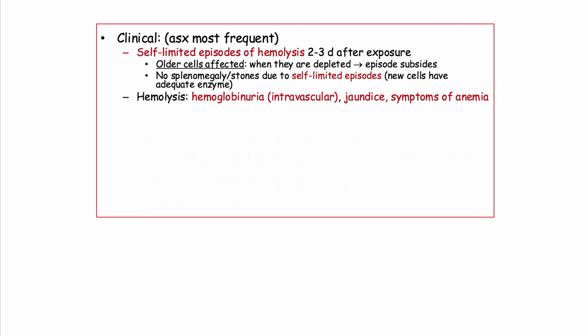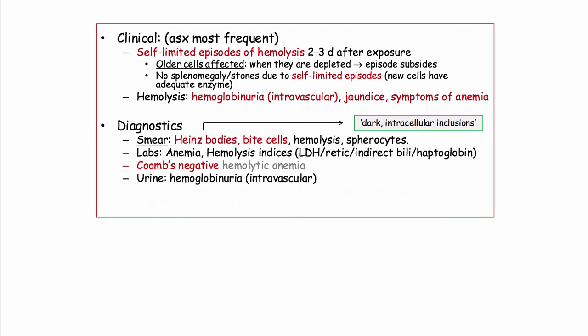Most episodes are asymptomatic and generally self-limited following oxidative stress exposure. As such, typical findings of chronic hemolysis, such as splenomegaly and pigment stones, are lacking. Clues to acute hemolysis include pink or red urine, jaundice, and symptoms of anemia such as shortness of breath or weakness. Diagnostically, Heinz bodies are seen on supravital staining and/or bite cells are present. Typical hemolysis indices include elevations of LDH, reticulocytes, and indirect bilirubin. Haptoglobin may be depressed. As this is an enzyme deficiency, it is Coombs negative — this is not an autoimmune hemolytic anemia.